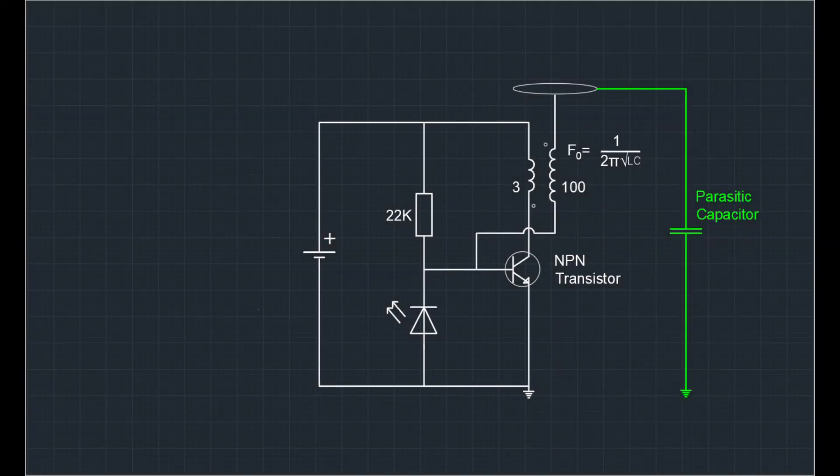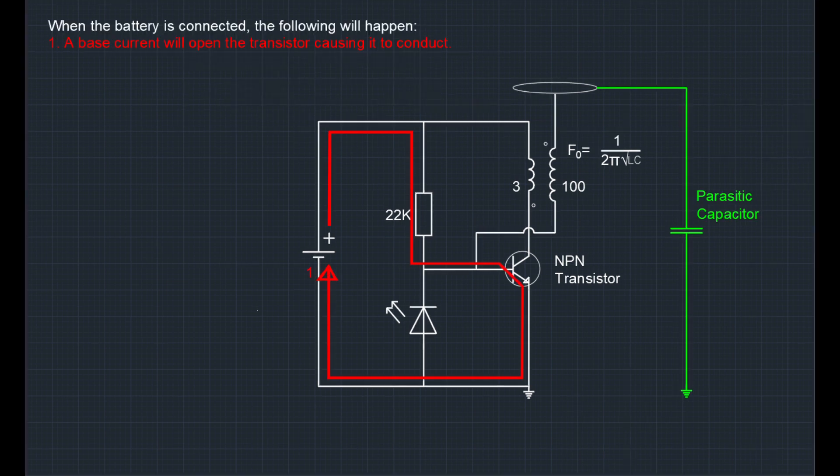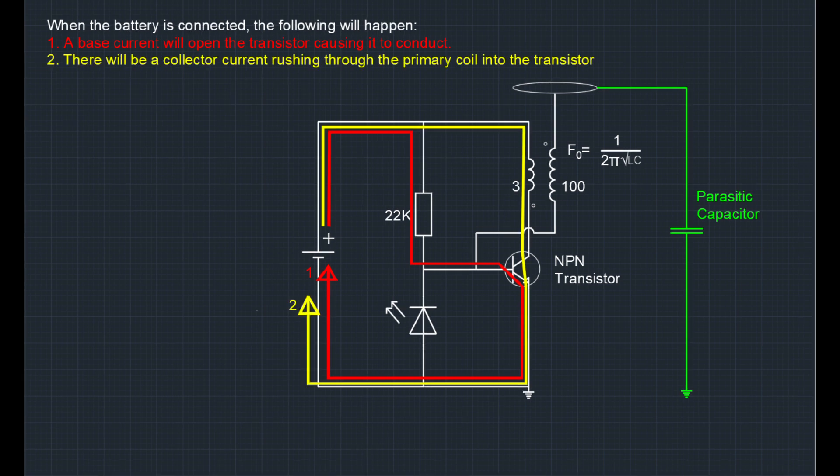This is a Slayer Exciter and basically when you switch it on, the LED here will not light up. But there will be a current going through the resistor into the transistor back to the battery. This causes the voltage over the LED on the cathode side to be positive and on the anode side to be negative, which means it will not light up. But the transistor will open up and start to conduct, causing another main current, the collector current, going through the coil into the transistor and back to the battery.